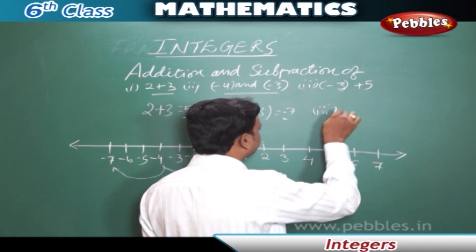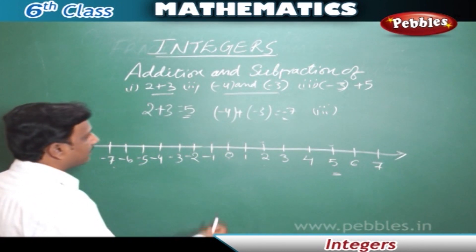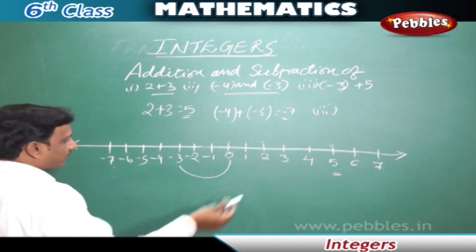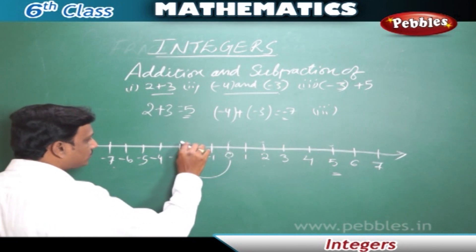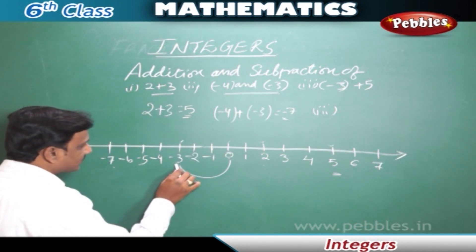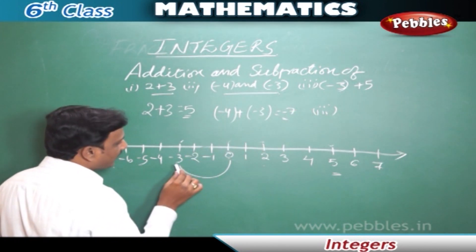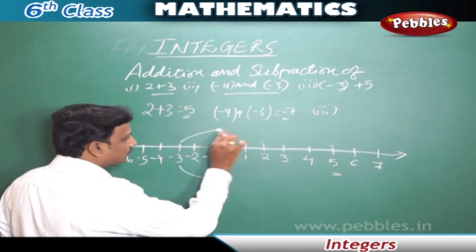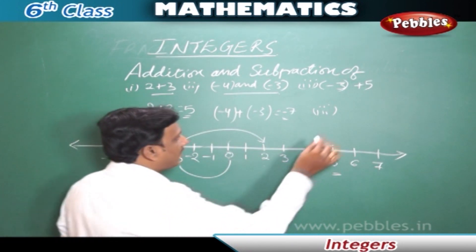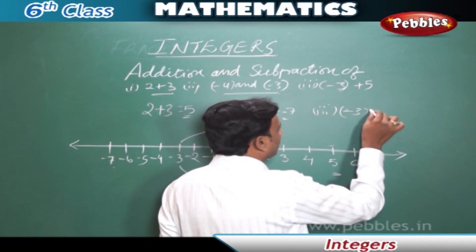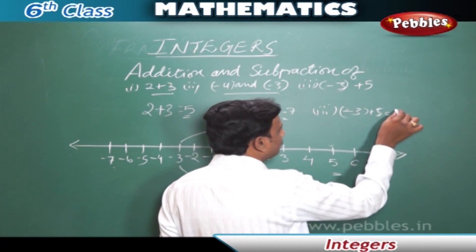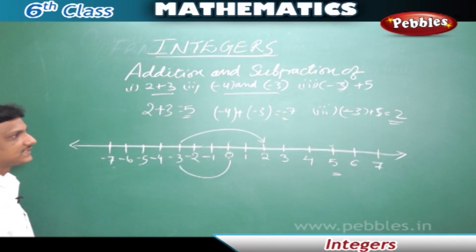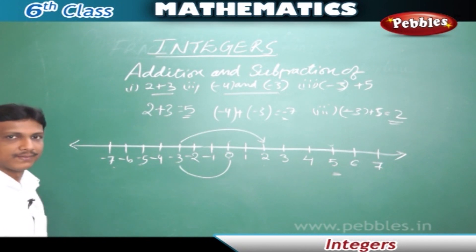In the third example, minus 3 plus 5. From 0 we go to minus 3, then again plus 5 — we move five positions to the right side because it is a positive number. One, two, three, four, five — we reach 2. So minus 3 plus 5 equals positive 2. In this way, we can do addition on a number line.